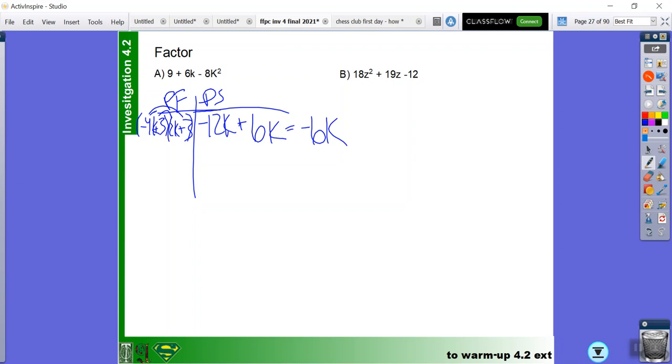And then I asked it positive 6k, so then I tried to switch these two numbers. So then I did negative 2k plus 3 times positive 4k plus 3.